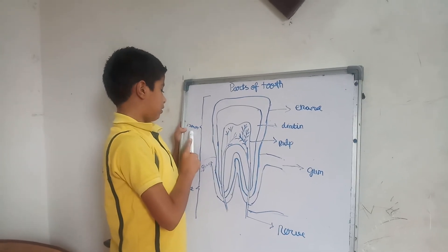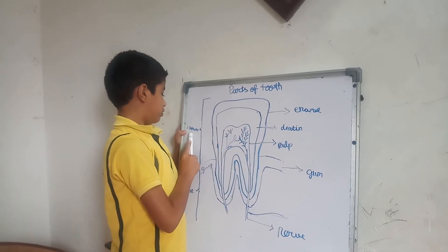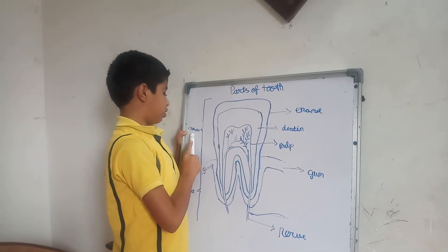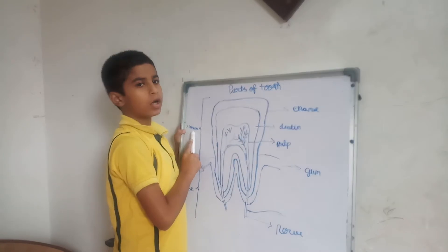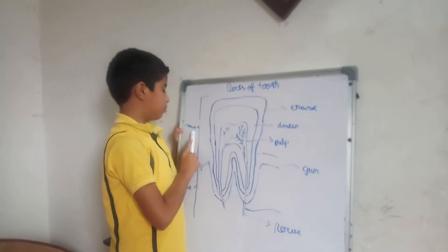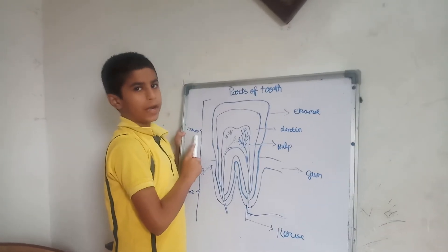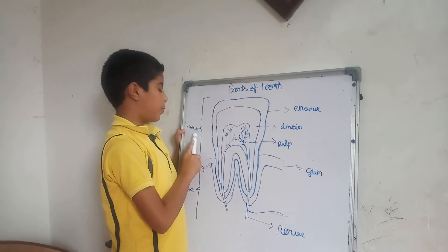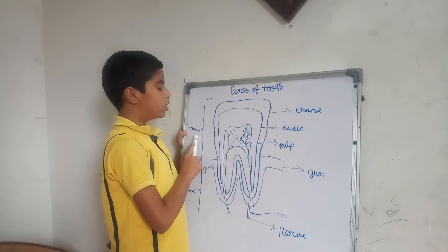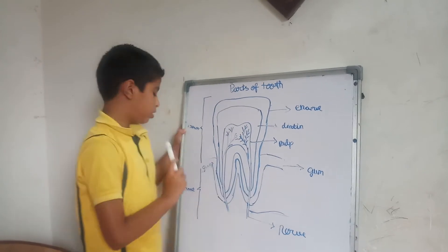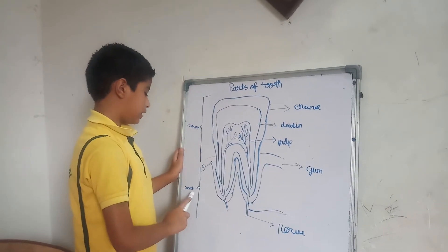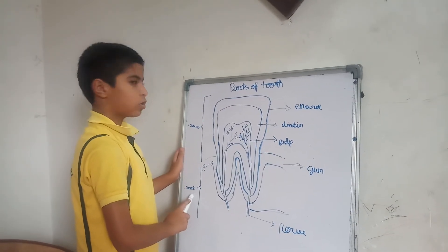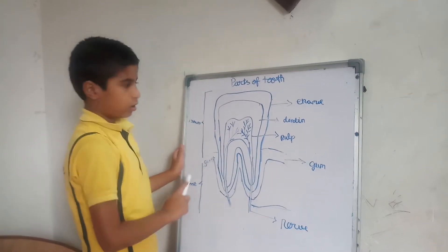The crown is not covered by the gum and can be seen when our mouth is open. It is called the crown. The tooth inside the gum is called the root.